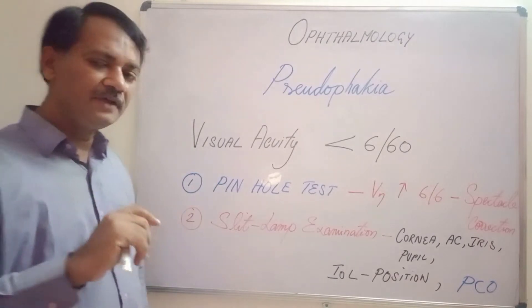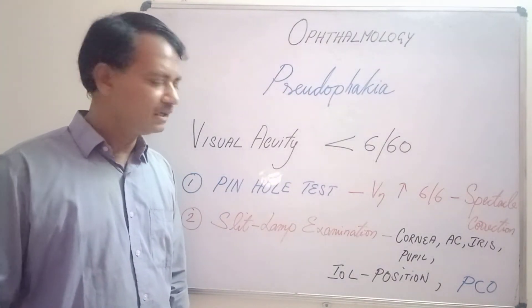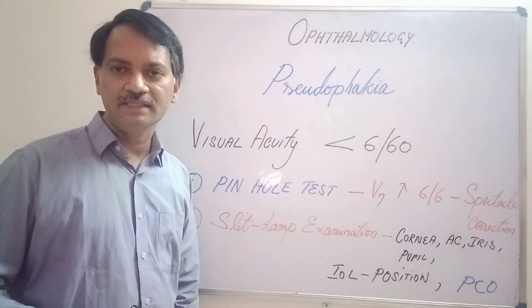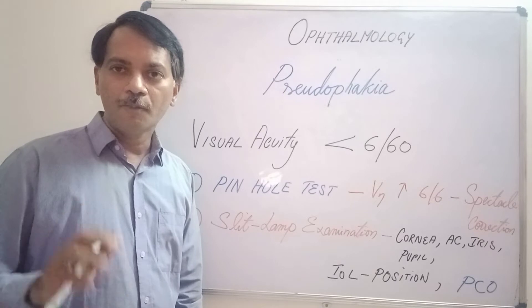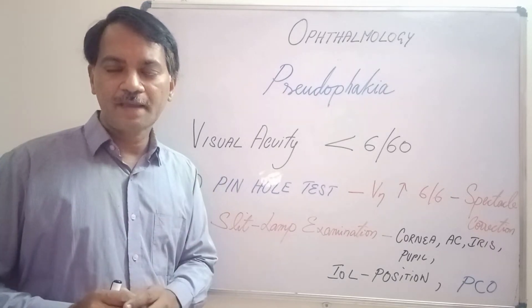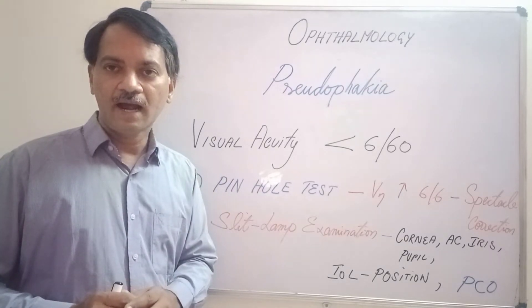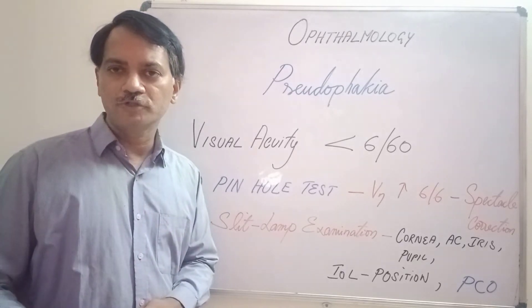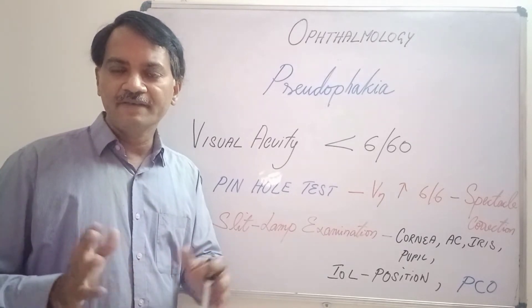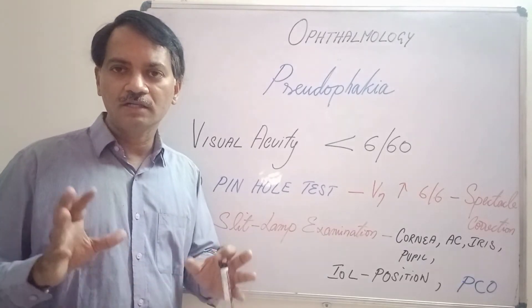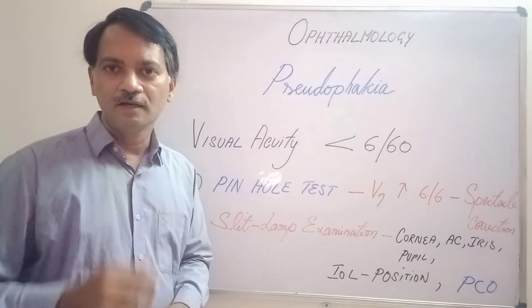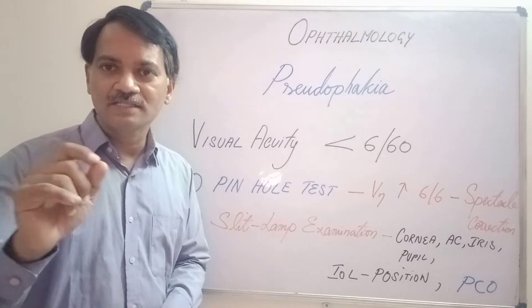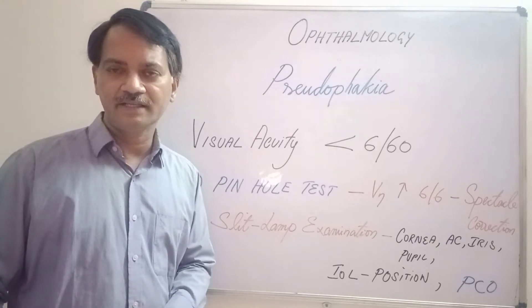Another important thing to observe in the slit lamp examination is whether the intraocular lens implanted inside the eye is properly positioned in the capsular bag and centered. If the intraocular lens is not properly positioned, if it has a small tilt or is not centered or has displaced towards one side, that may cause astigmatism or a refractive error in the patient, leading to decreased vision.